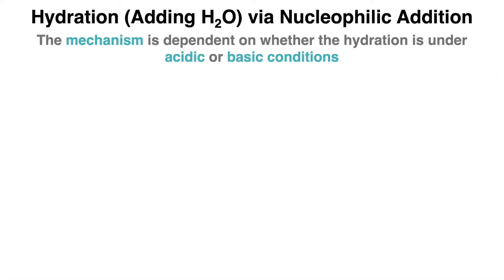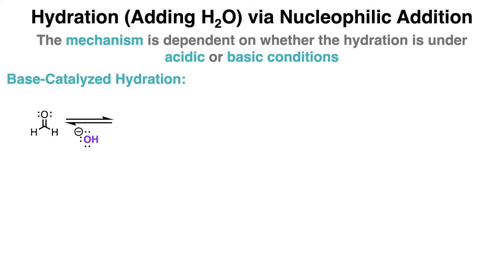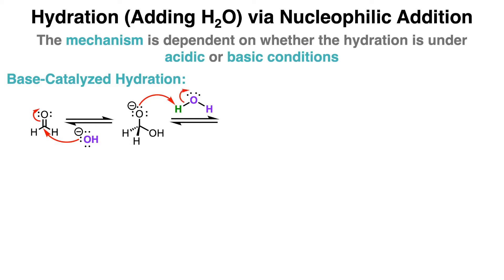When an aldehyde or ketone is treated with water, the carbonyl group can be converted into a hydrate, also known as a geminal diol, where both hydroxyl groups are connected to the same carbon atom. Hydration can either be base-catalyzed or acid-catalyzed. In base-catalyzed hydration, OH- acts as a nucleophile to attack the electrophilic center of a carbonyl. Then the pi bond of the carbonyl breaks to form a new lone pair on oxygen, and O- gets protonated by a water molecule to form a hydrate molecule.